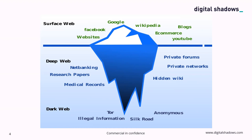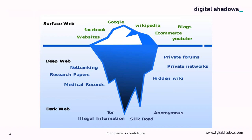The dark web is defined as a layer of information and pages only accessible through overlay networks that run on top of the normal internet and obscure access. You need special software to access the dark web because a lot of it is encrypted, and most dark web pages are hosted anonymously. The most popular software is the Onion Router (Tor), with i2p being another common one.